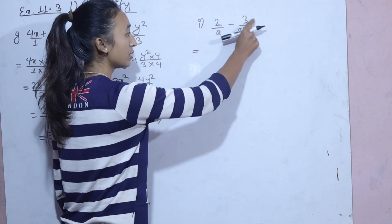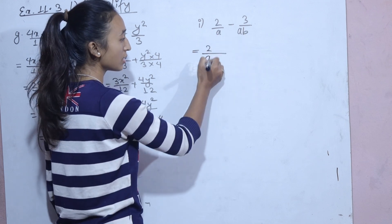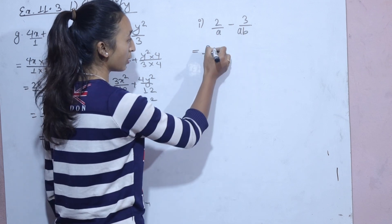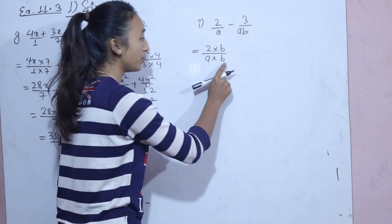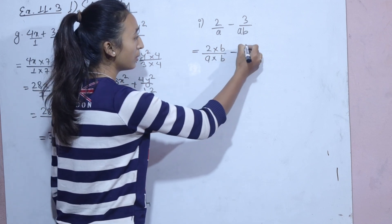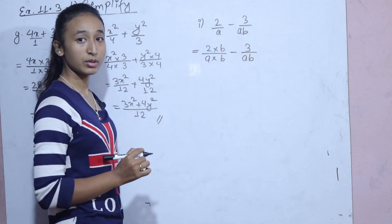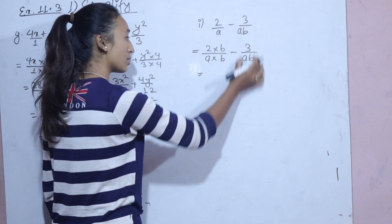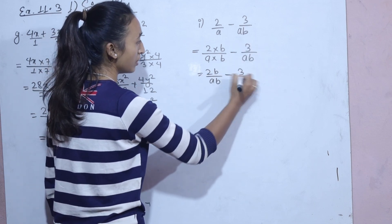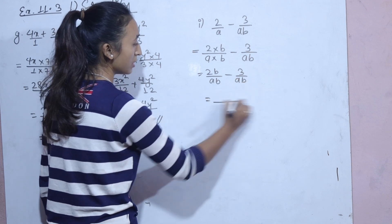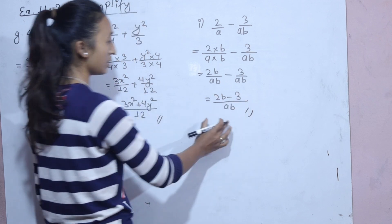Next sub-question: 2a minus 3a divided by b. Multiply by b to get the common denominator ab. The denominator is the same — ab — giving us 2b by ab minus 3b by ab, which equals 2b minus 3b by ab.